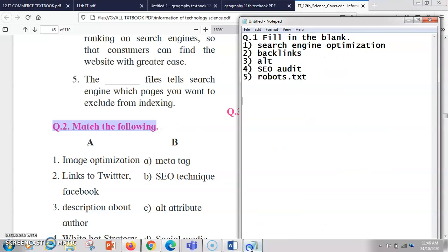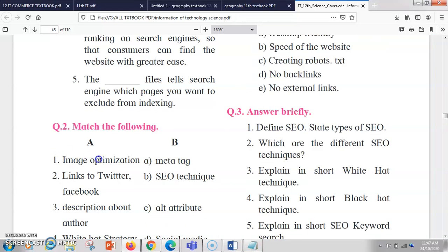Now we'll go with the second exercise, that is match the pairs. So the first one here is image optimization, so the answer for image optimization is going to be alt attribute.